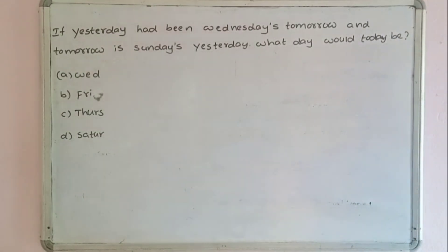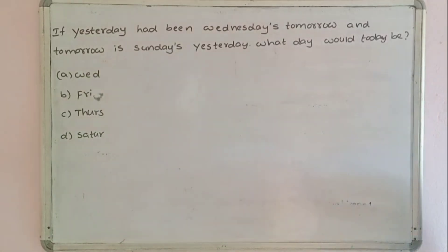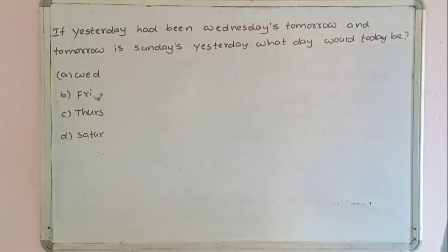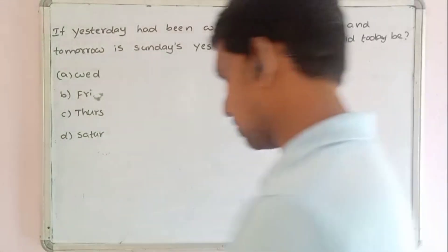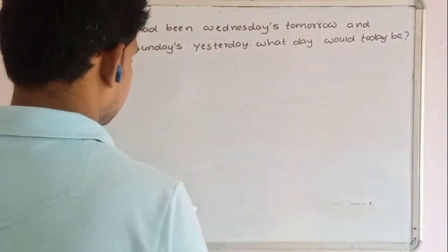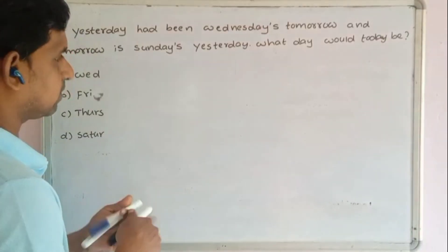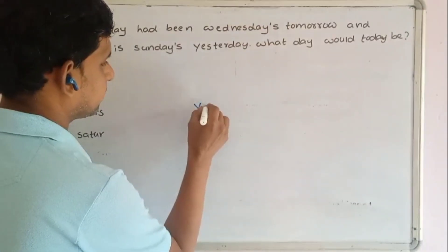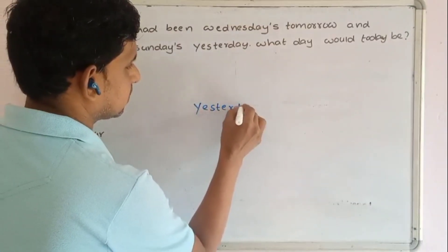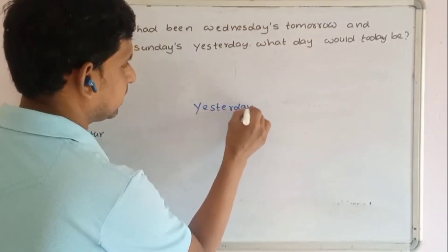If yesterday had been Wednesday's tomorrow, and tomorrow is Sunday, what day would today be? Let's set up the days: yesterday, today, tomorrow.